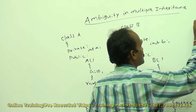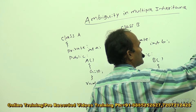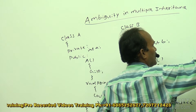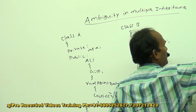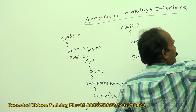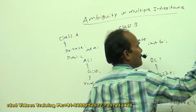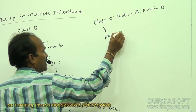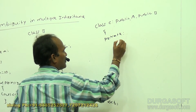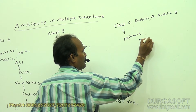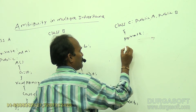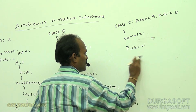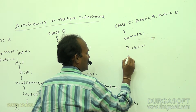Next, take class C. It is created from class A and class B — public A, public B. Within this class, there is nothing to declare. Just a public section, and close it.